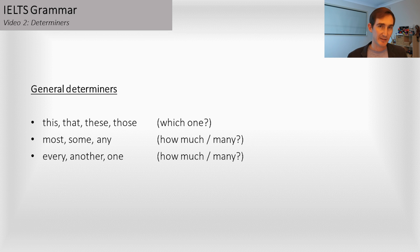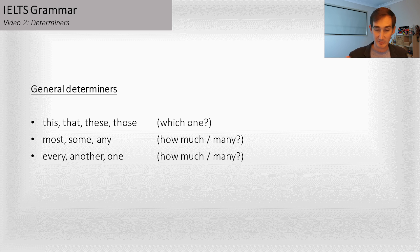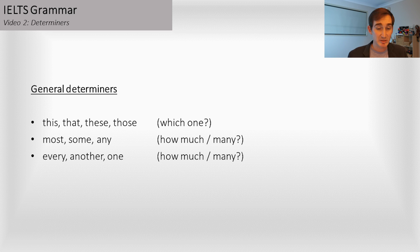Now we have all the other determiners. I've just got a few here. These determiners focus on which one — they tell you which one. And how much or how many. Which one am I talking about? This one, that one, these ones, those ones — those words are determiners. How much? Most, some, any — determiners. Every, another, one, two — these are also determiners. There are a big list of them — you can go research them.